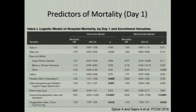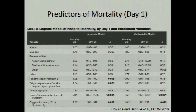We examined predictors of mortality in a multi-institutional cohort of about 300 ARDS patients. In univariate analysis, PRISM score, degree of organ failure, cancer or stem cell transplant history, and oxygenation index were all related to mortality. When placed into a multivariate model, the only two independent predictors of mortality were cancer/HSCT history and oxygenation index — this is data from day one.